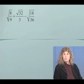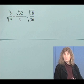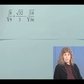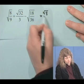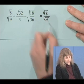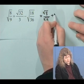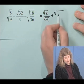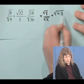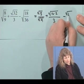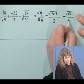The square root of 8 over 9, plus the square root of 32 divided by 3. The 3 is not under the radical. And then we'll subtract the square root of 18 over the square root of 36. Plus, let's see, 32, we can write that as 16 times 2.